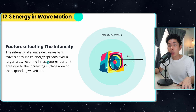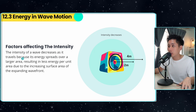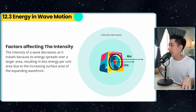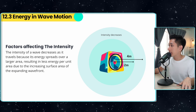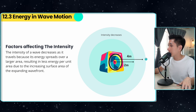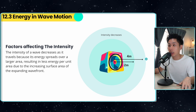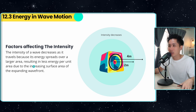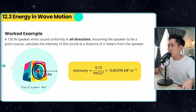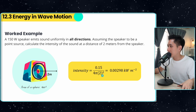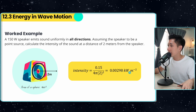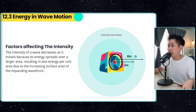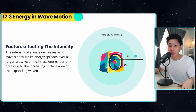The intensity of a wave decreases as it travels because energy spreads over a larger area. For example, if we calculate the intensity at 4 metres away from the speaker, it would be lower — which makes common sense. Looking at the equation, the greater the denominator, the lower the intensity, which explains why intensity is affected in this way.